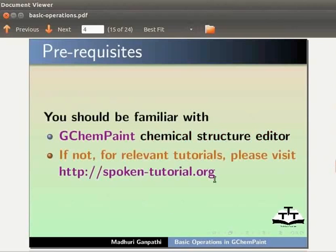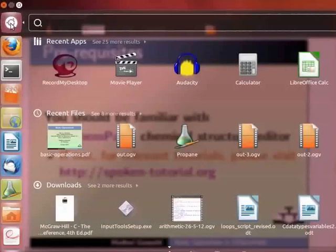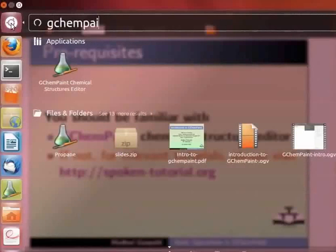To open a new GChemPaint application, click on Dash Home. In the search bar that appears, type GChemPaint and click on the GChemPaint icon.